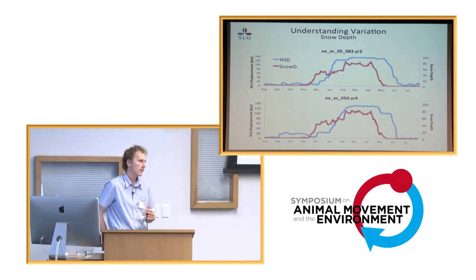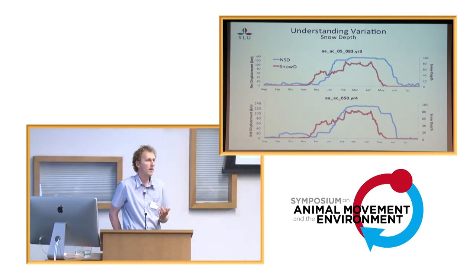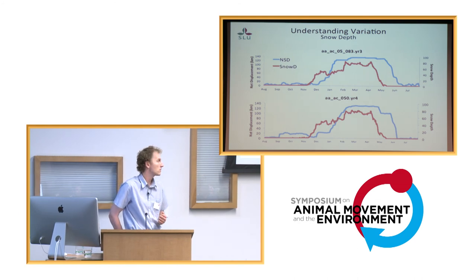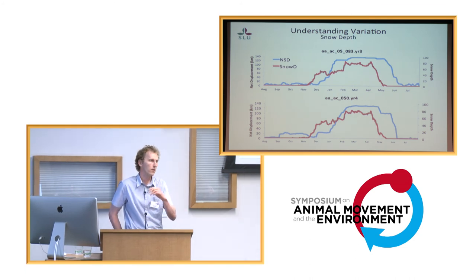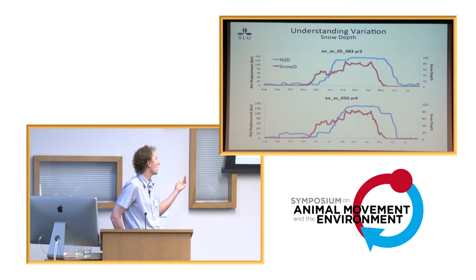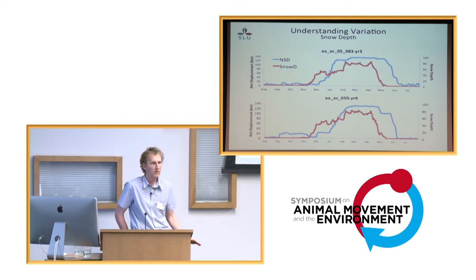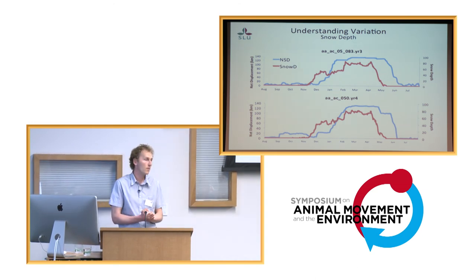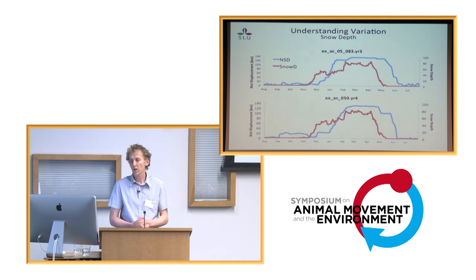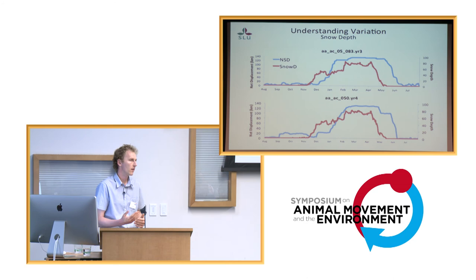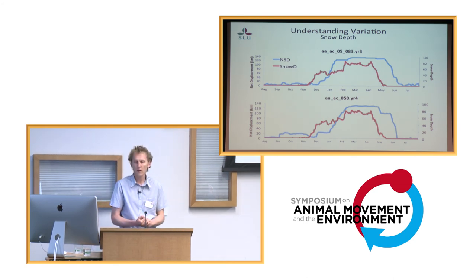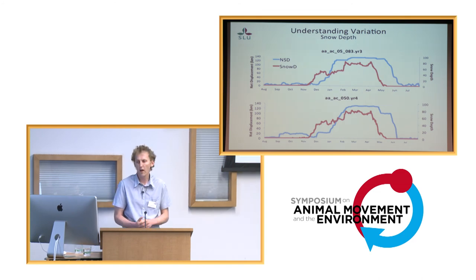Having daily snow depth data also lets us understand what may be influencing the migratory movements of moose. In blue we have the displacement of the moose, and in red we have the arrival of snow and the increasing snow depth. It's apparent that moose are actually staying in the summer range until the snow is reaching a depth of 60 centimetres, and then they're migrating 100–150 kilometres through 60 centimetres of snow or more by the time they finally get to their winter range. This is something we hope to develop further — understanding how changes in the arrival and depth of snow may affect the timing of migratory movements.